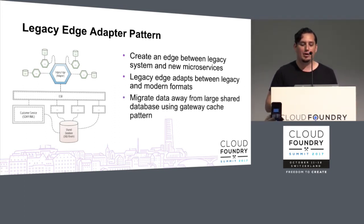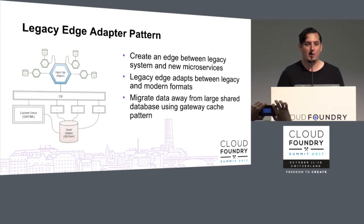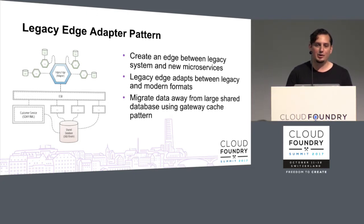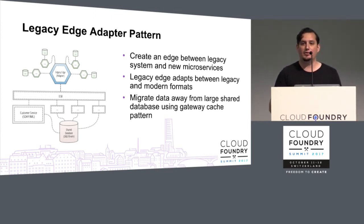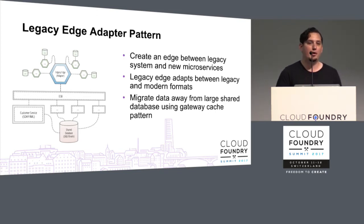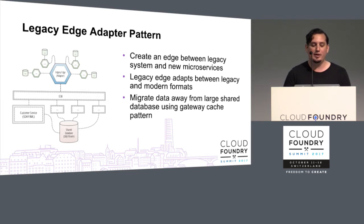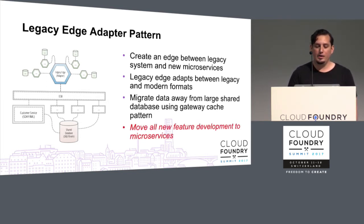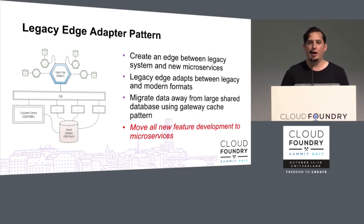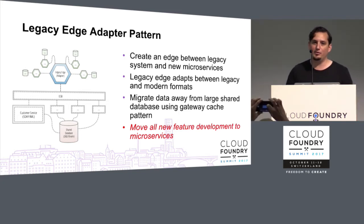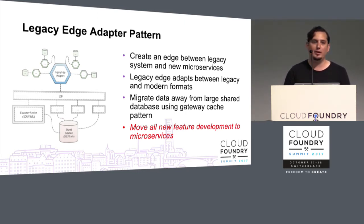The goal is to migrate data away from the large shared database using a gateway cache pattern. Just like a cache, you reach into the back end if you don't have a record in your microservices database. If I'm trying to get a customer record and it's not in my microservice database, I look at the legacy system, take control of a single service — maybe the customer service — request that object, and save it to my microservices database. On the subsequent request, I go there instead of the legacy backend. This allows you to move all new feature development to your microservices without splitting the monolith, and begin migrating data away into your microservice layer.